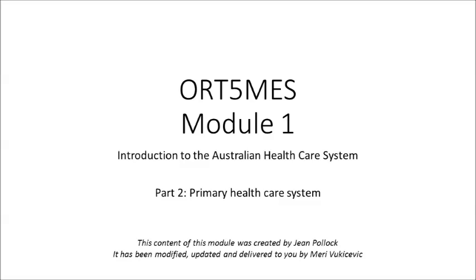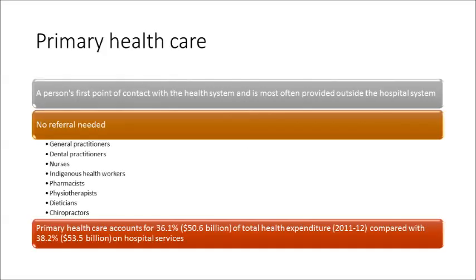Hi, and welcome to Part 2 of Module 1, where we're going to be talking about primary health care systems. In Australia, the primary health care system is typically a person's first point of contact with the health system, and it's most often provided outside the hospital system.